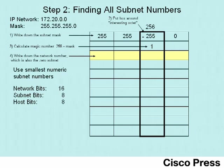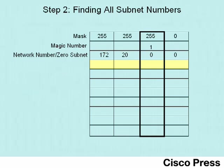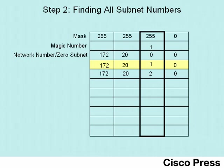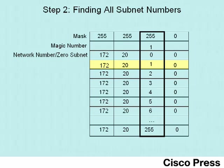We continue by adding the magic number to the previous subnet number to get the next subnet number. We copy the three octets outside of the rectangle and add 1 to the third octet: 0 plus 1 gives us 172.20.1.0. From there, you can guess the rest — 172.20.2.0, 172.20.3.0, 172.20.4.0, 172.20.5.0, and so on, until we get to the final subnet: 172.20.255.0.